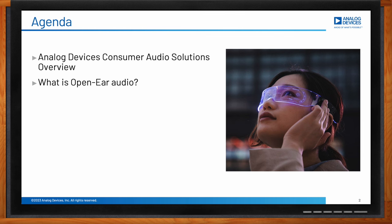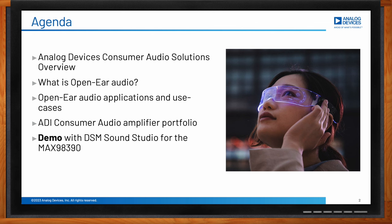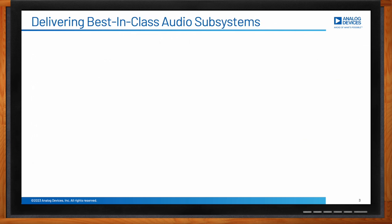We're going to talk about open ear audio: what it is, the different kinds, and some of the applications and use cases. I'll talk about our amplifier portfolio designed for open ear audio and how we have great designs to help you get your solution faster. Towards the end I'll run through a recorded video of a quick MAX 98390 demo, then recap with a summary and best practices. Analog Devices is delivering a lot of great audio solutions for audio subsystems in the consumer market.